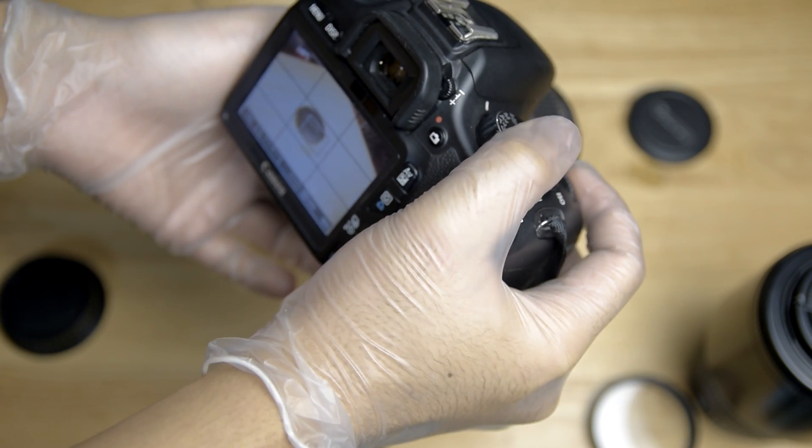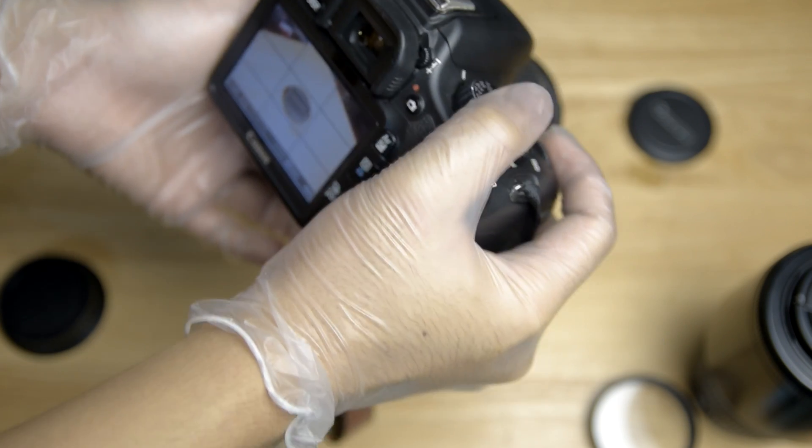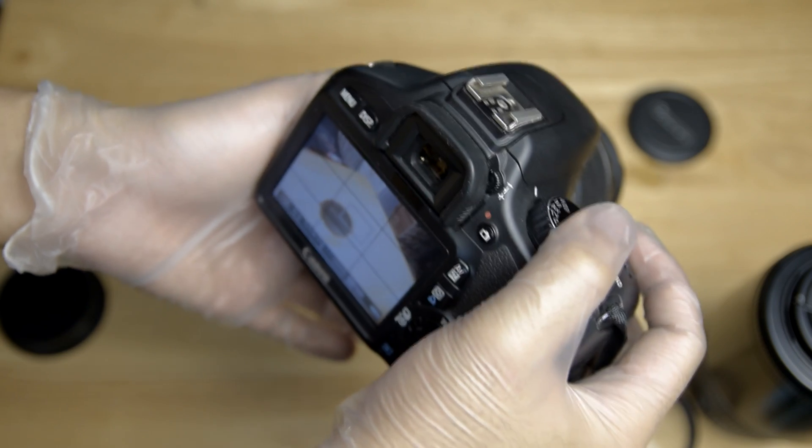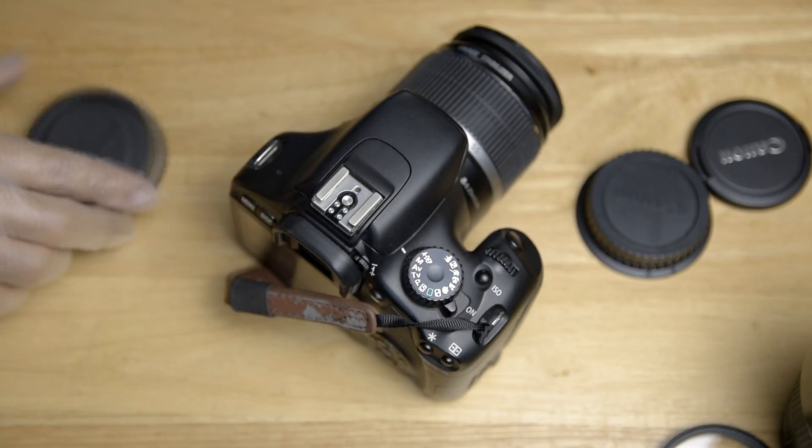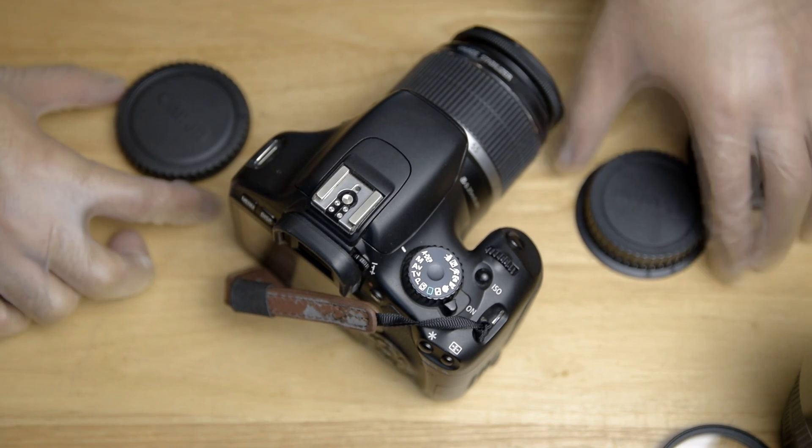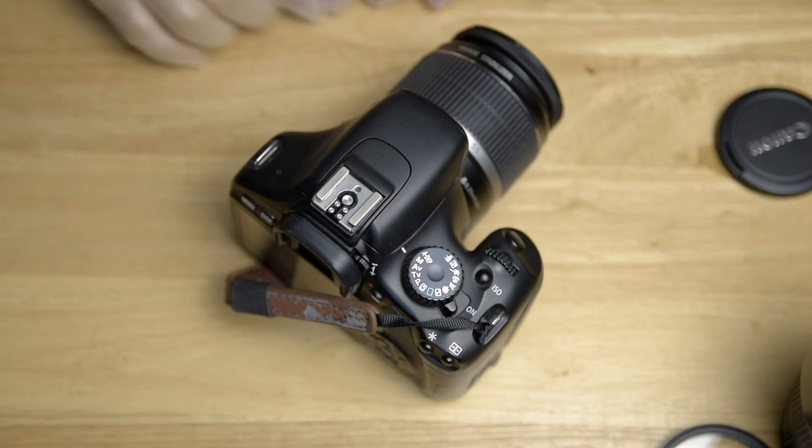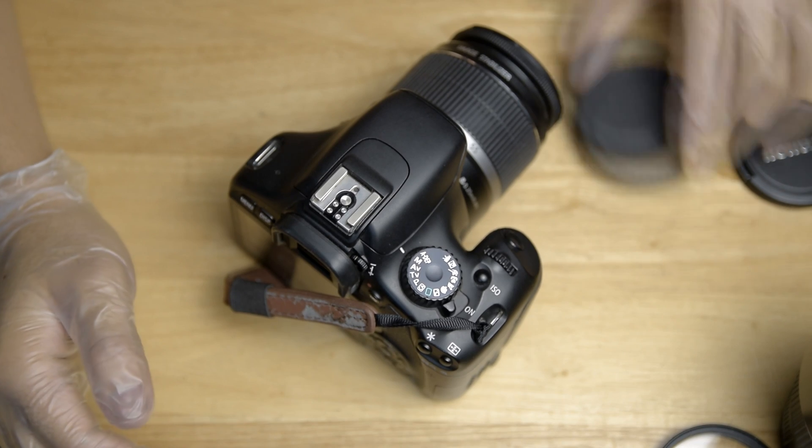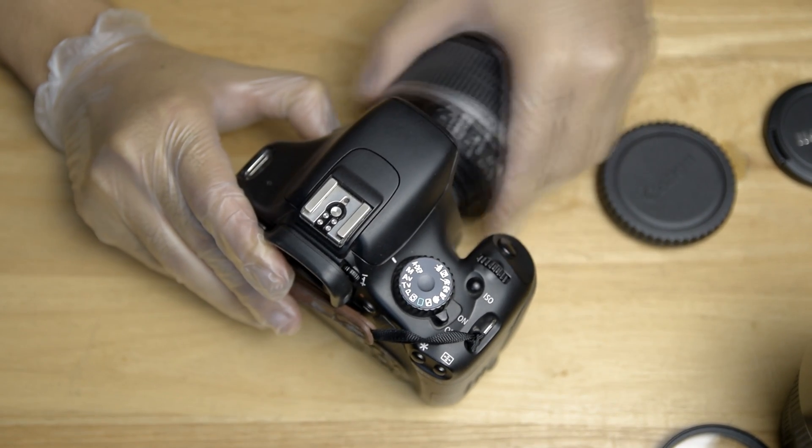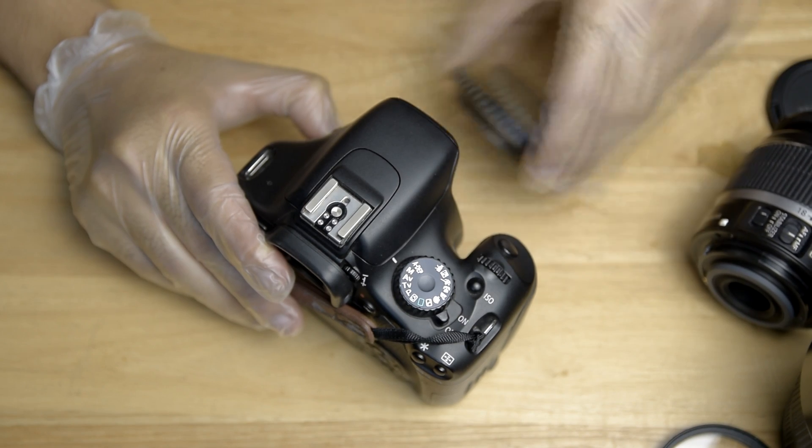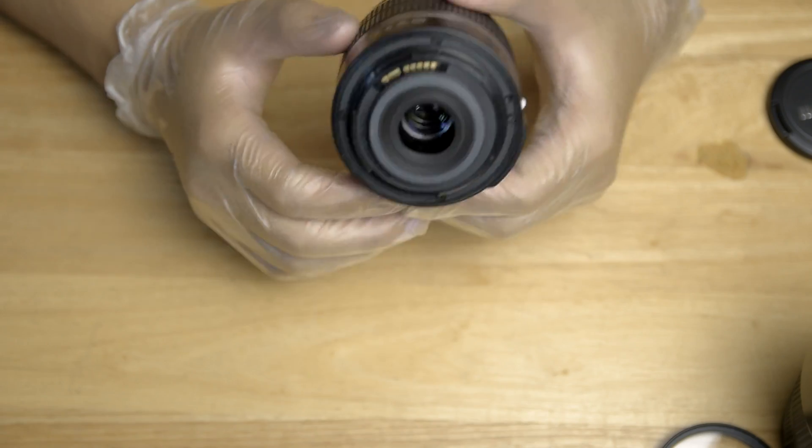Now, early indication that I see here is because the manual focus works, then the gears should be in good working condition. Because if the gears are bad, the manual ring should be stuck or the manual focus won't work at all. But since it does, it should not be because of the gear, but because it is easier to access, we will check it out first.